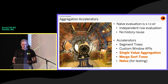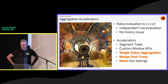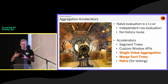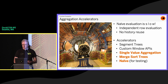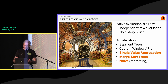That's the high-level operator. But then there are the individual functions, and we have these things called aggregation accelerators. If you try to do a moving average and redo it every time, you're throwing away a lot of information. So people have come up with techniques for doing this a lot faster and reusing information between rows. A classic one is something called segment trees. We also have custom window APIs where the aggregate just says, let me deal with this. In the last two years we've added single value aggregation and merge sort trees. We've also implemented naive aggregation, because you want to be able to check if these fancy algorithms work — and if you turn off the optimizer, that's what you get.